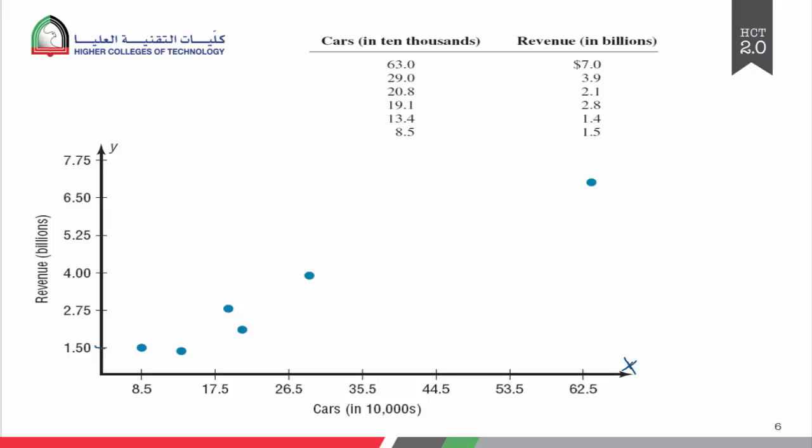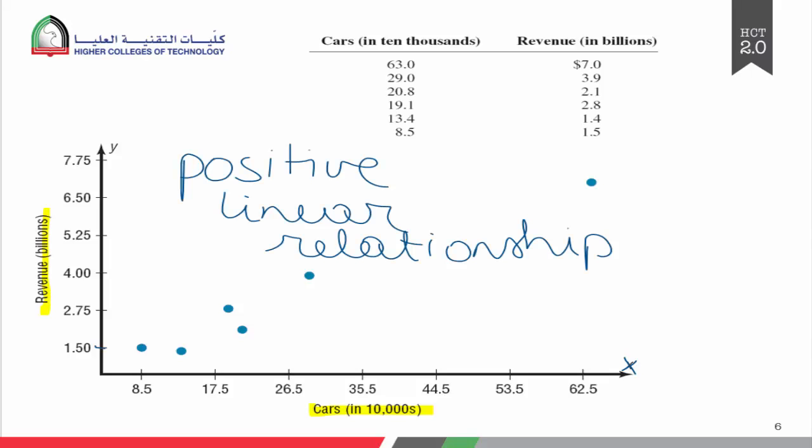Here you can see the scatter plot of our data. The independent variable is cars and the dependent variable is revenue. Our scatter plot shows that there is a positive linear relationship between the amount of cars we rent out and the revenue we earn.